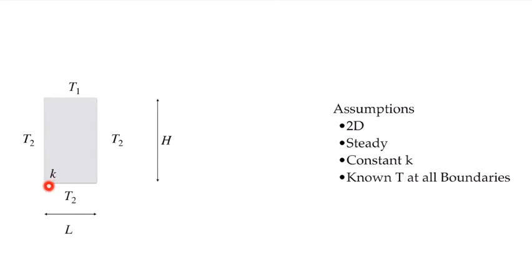The problem is we have a solid which is rectangular, in this case the height and the length are of different dimensions. It has a constant conductivity, of course it's two-dimensional, and it will not be varying with time, it'll be steady.